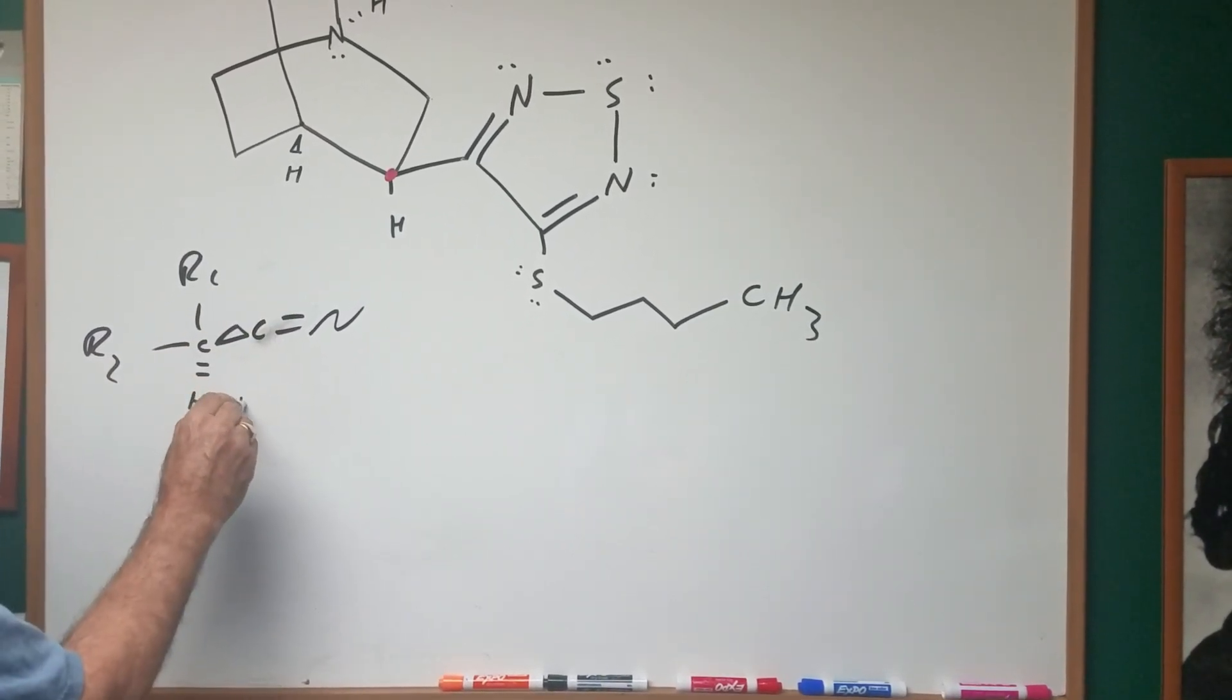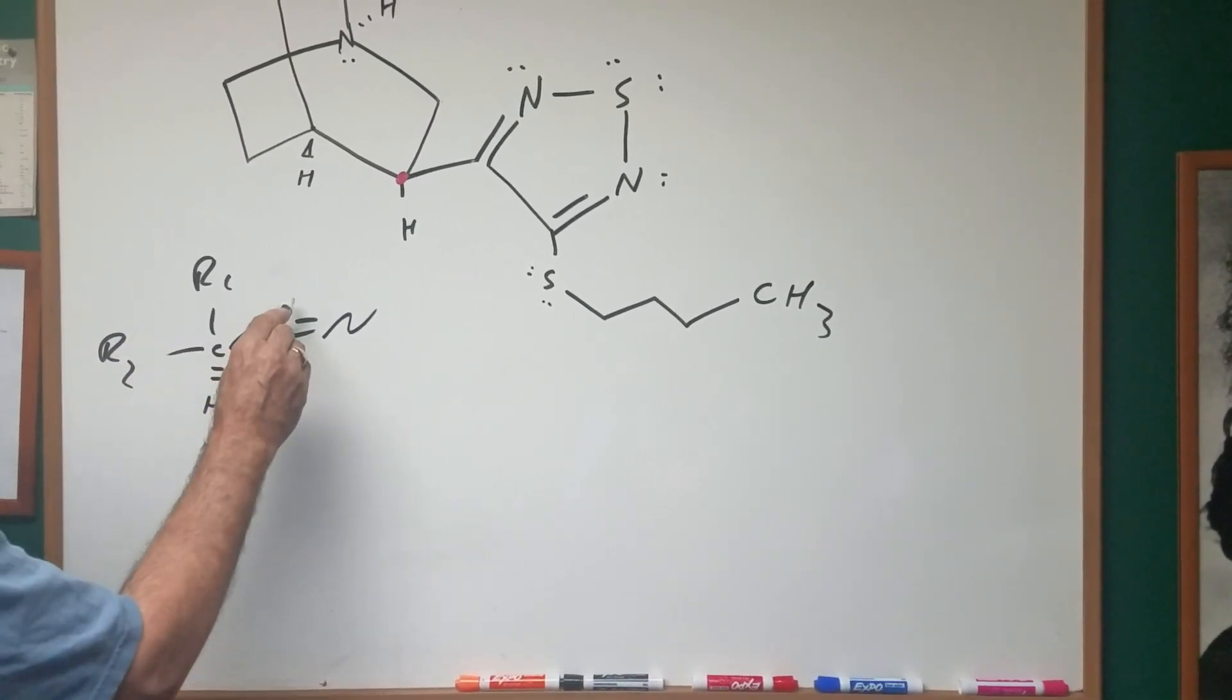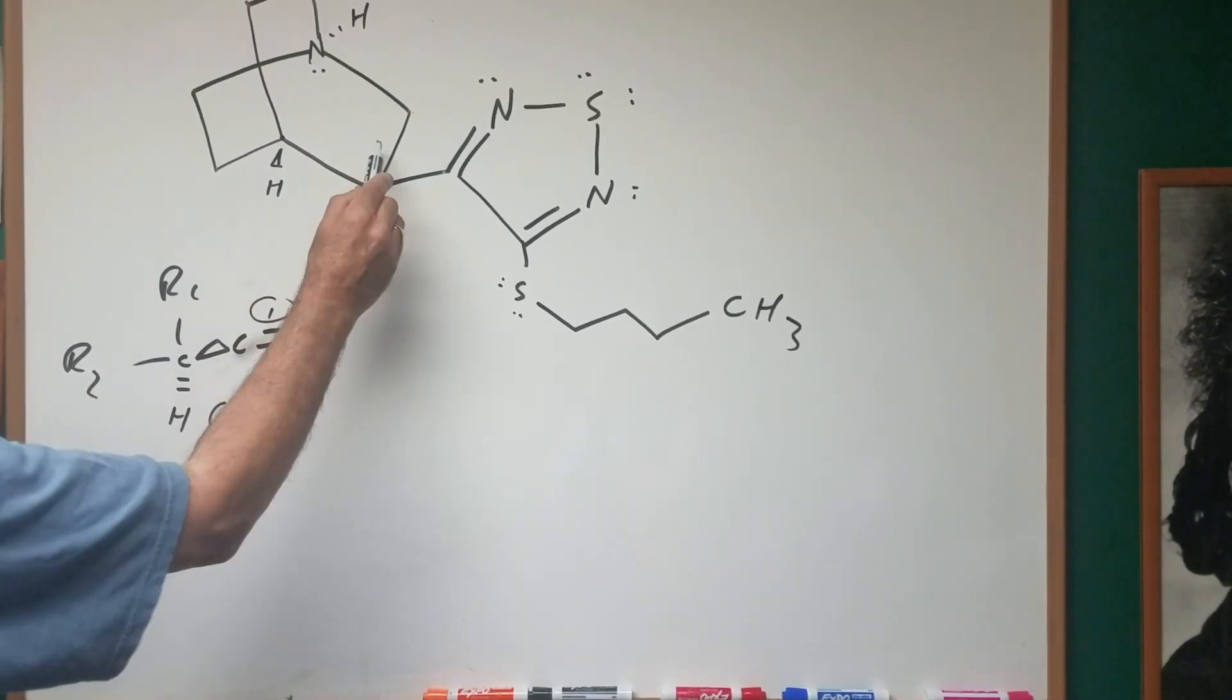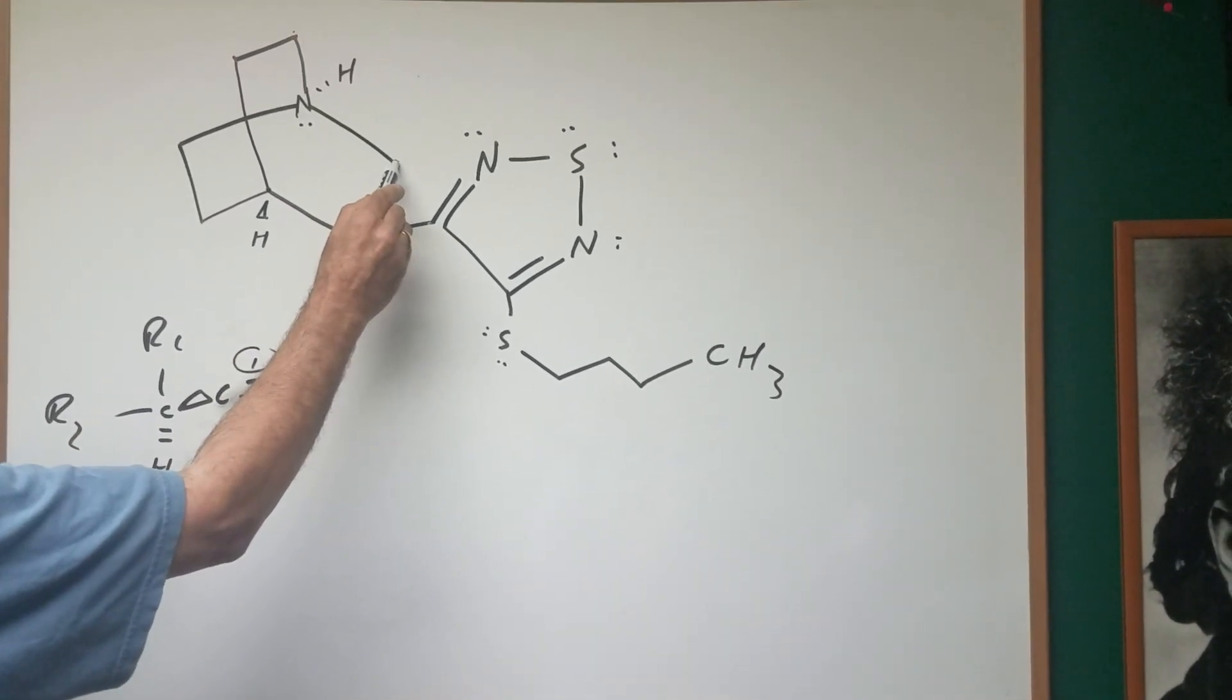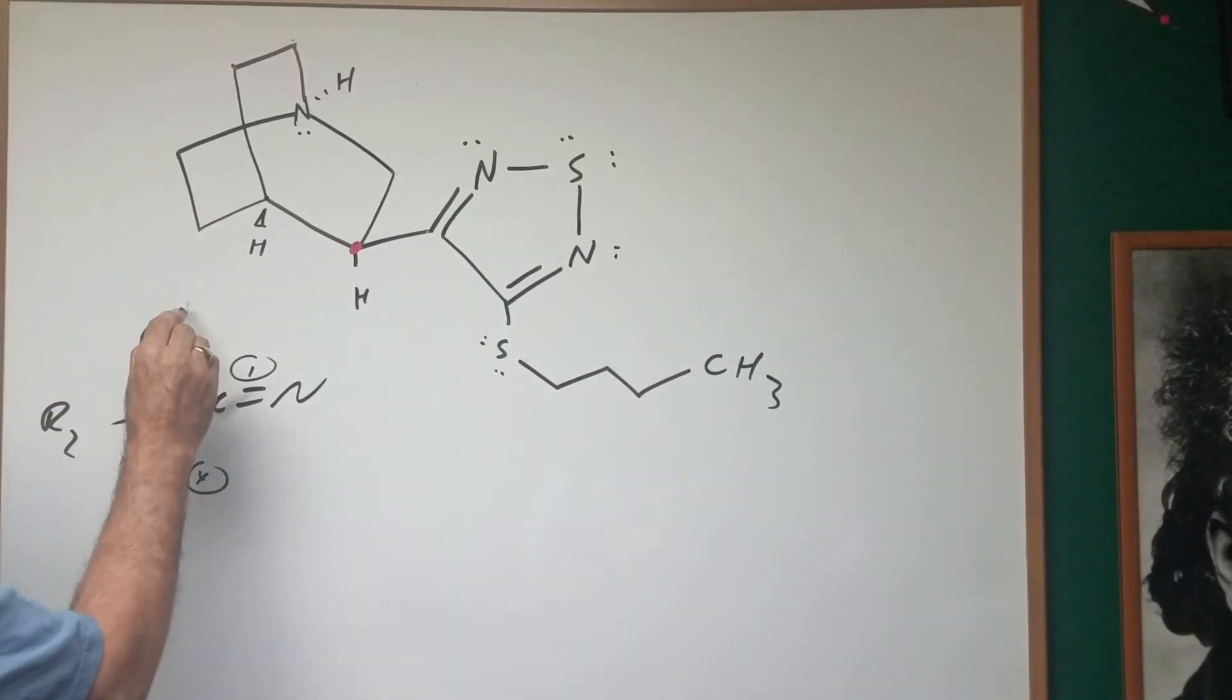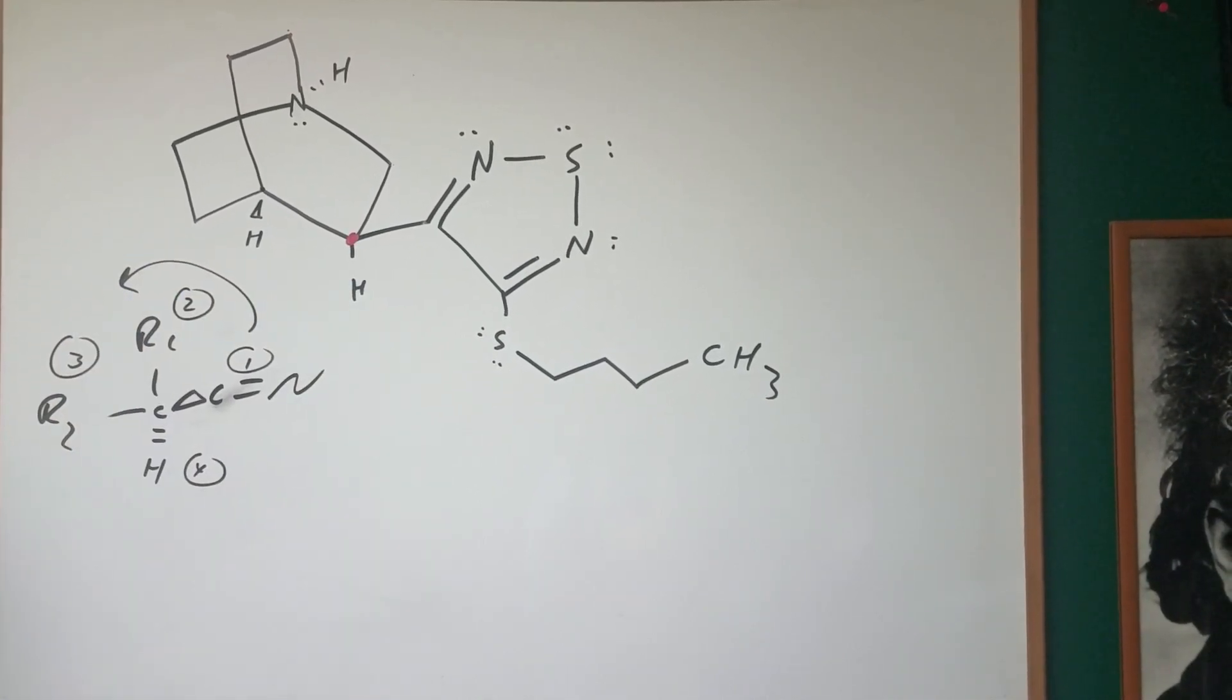Number four is a dash, which means we're in perfect position. This is going to be group number one, according to the Cahn-Ingold-Prelog rules. This path going up is a carbon to a nitrogen, where this is a carbon going to more carbons. So this would be two, and this would be three. You go around. It's counterclockwise.